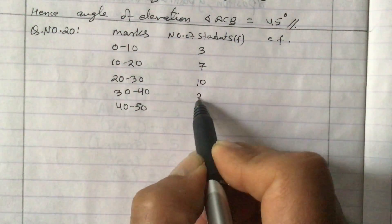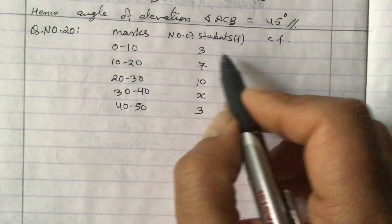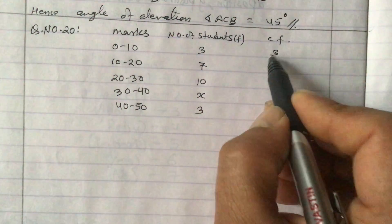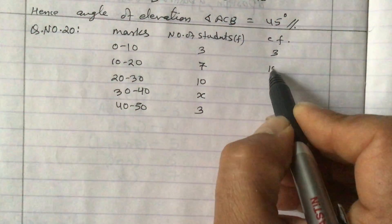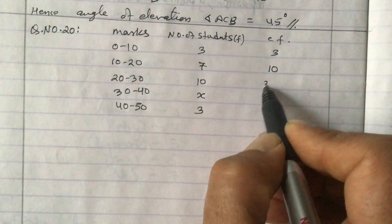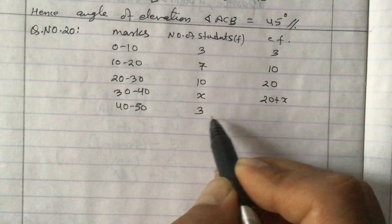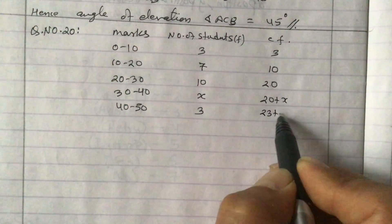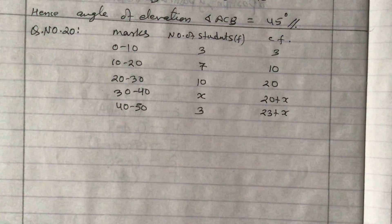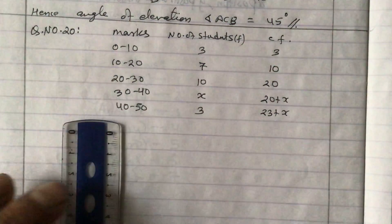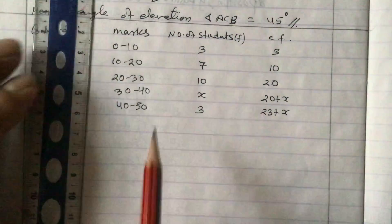Number of students given: 3, 7, 10, x, and 3. Cumulative frequency: this 3 as it is, 3 plus 7 is 10, 10 plus 10 is 20, 20 plus x is 20 plus x, 20 plus 3 is 23 plus x. This is cumulative frequency.